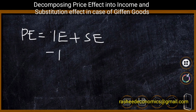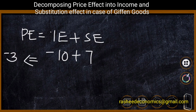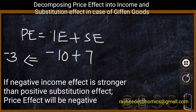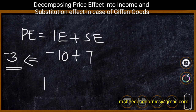We have already explained that price effect is a combination of income effect and substitution effect: price effect equals income effect plus substitution effect. Suppose income effect is negative — say negative 10 — and substitution effect is positive — say positive 7. If we add these two values we get a negative price effect of negative 3.